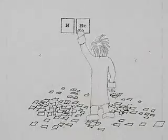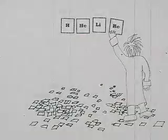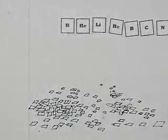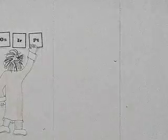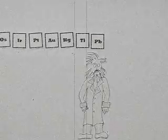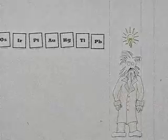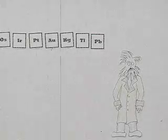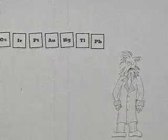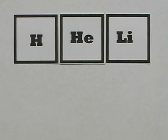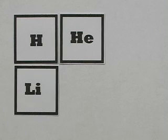Dmitry Mendeleev put light ones, like hydrogen and helium, on one end, and heavy ones, like gold, mercury, and lead, on the other. Then he did something very clever — he rearranged the long line into a table according to chemical properties. Hydrogen first, because it's the lightest. Then helium. Lithium is next, but it has similar chemical properties to hydrogen, so Mendeleev put it underneath hydrogen.